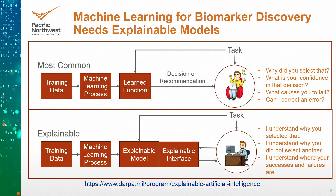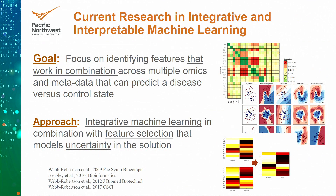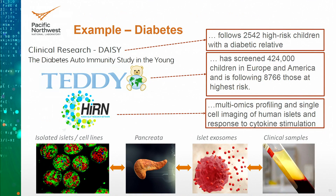The current research we're working on in integrative data and interpretable machine learning focuses on identifying features that work in combination across multiple omics data types, data sets, and metadata that can predict disease or an exposure versus a control state. This involves integrating machine learning approaches that account for the diversity and disparity across multiple data types, combined with feature selection approaches that can model the uncertainty within a data set.